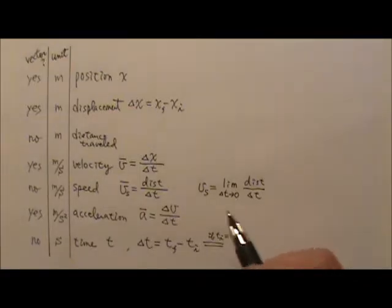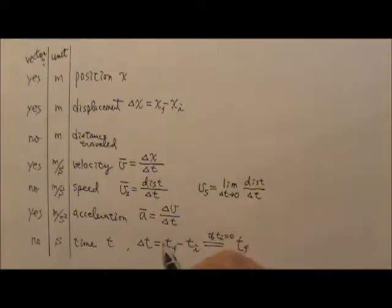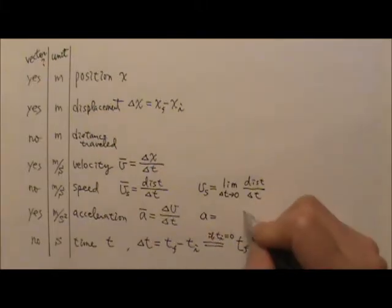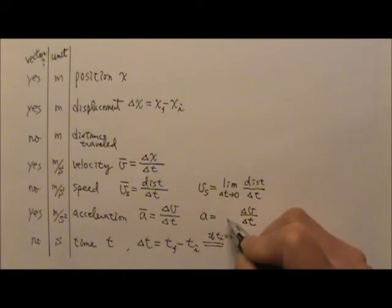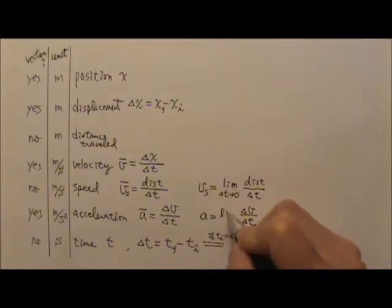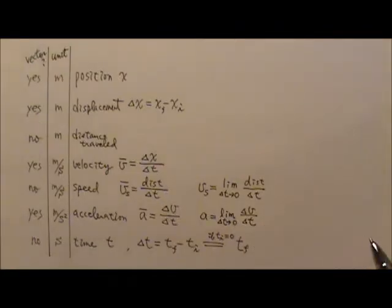Under the limit when the time is so short that it approaches zero. And that's the instantaneous speed. And of course, the instantaneous acceleration is also an average acceleration, delta V over delta T. Again, this is an average taken over an extremely short amount of time. It is taken under the limit when the time is so short that it approaches zero.